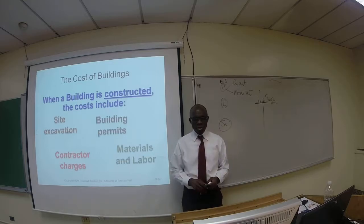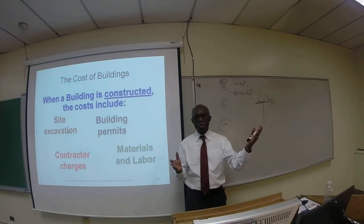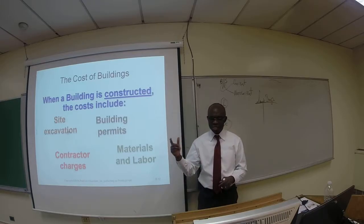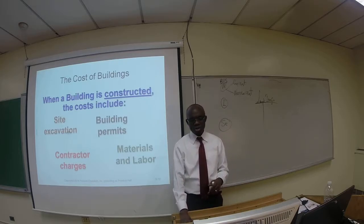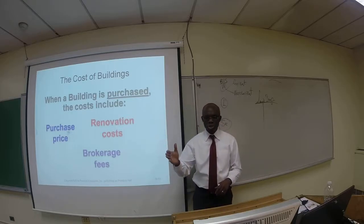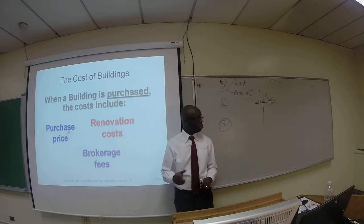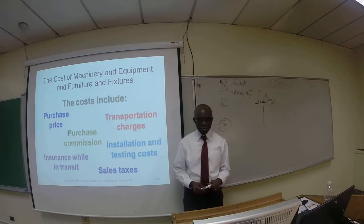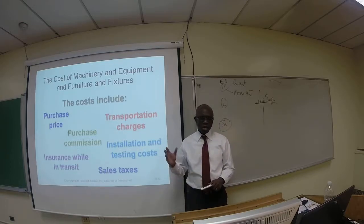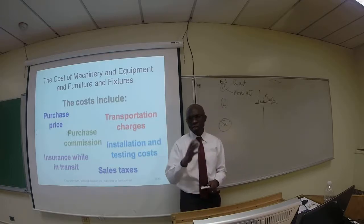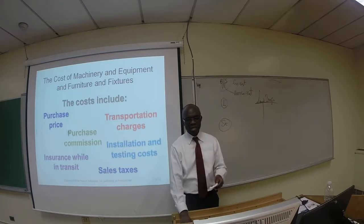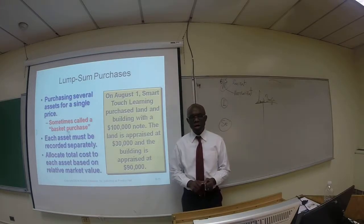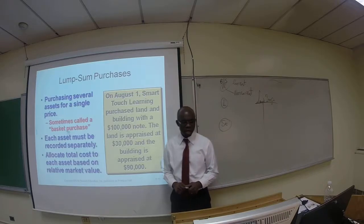For buildings, when constructed, the cost includes site preparation, excavation, building permits, contractor charges, materials, and labor. If purchased, the cost includes the purchase price, renovation costs, brokerage fees, and every other cost to get the building ready for its intended use. The same generic rule applies to machinery, equipment, furniture, and fixtures — the invoice price plus all related costs to bring the asset into use.